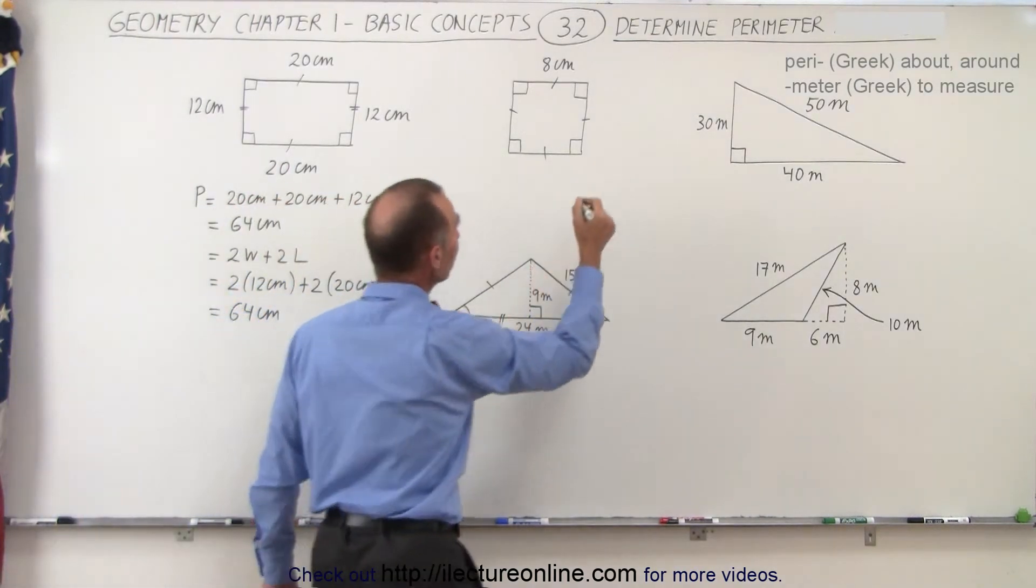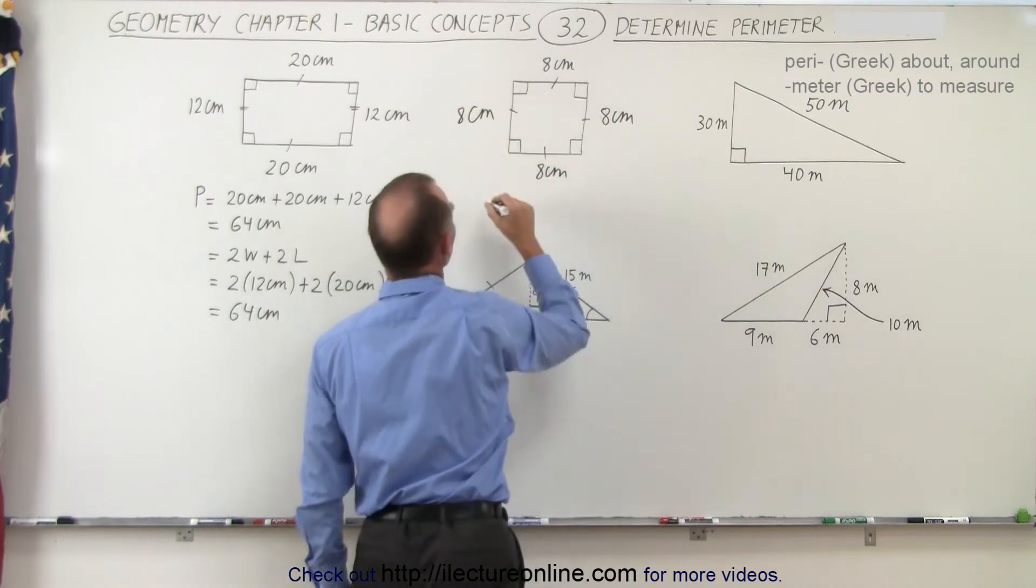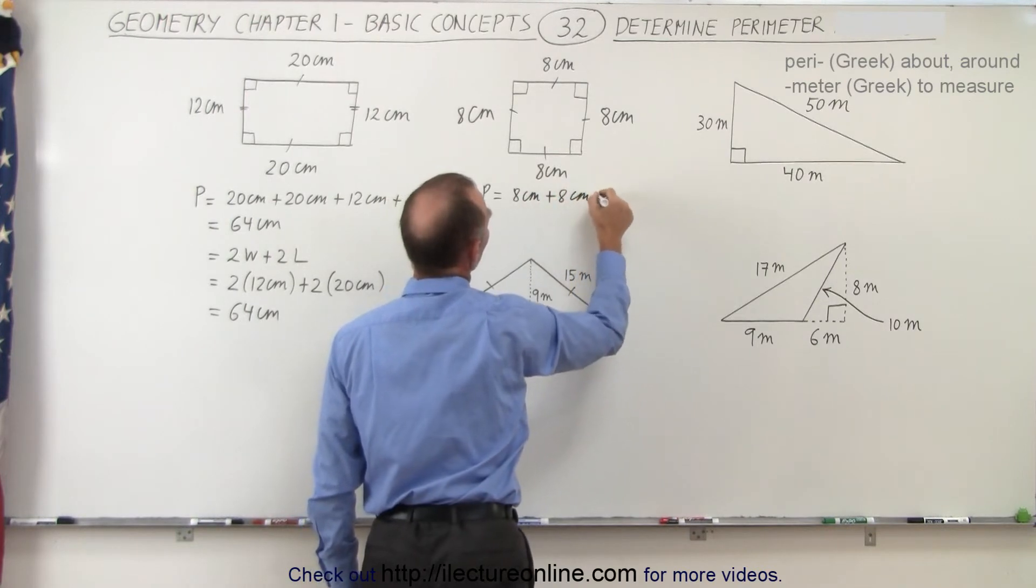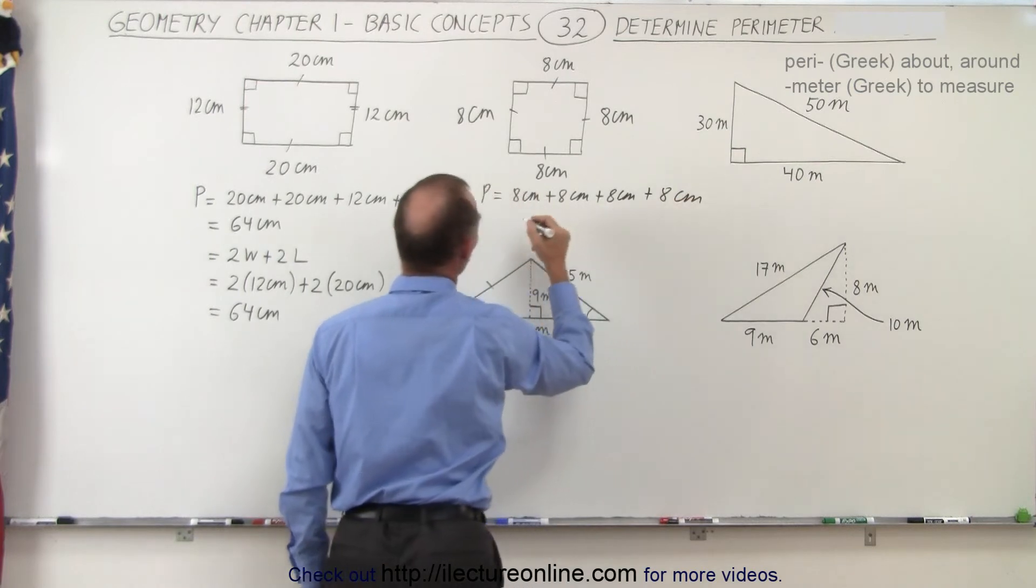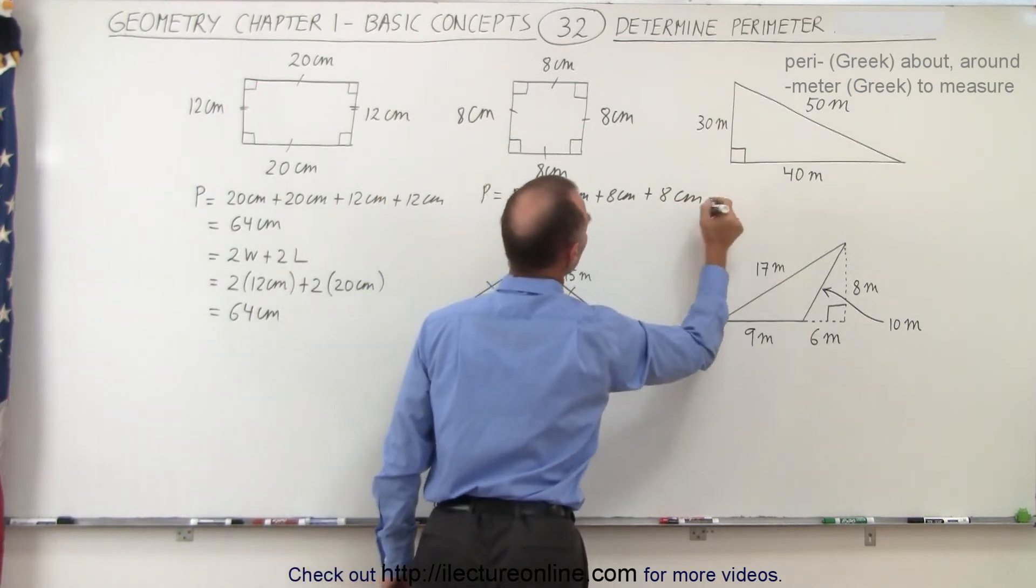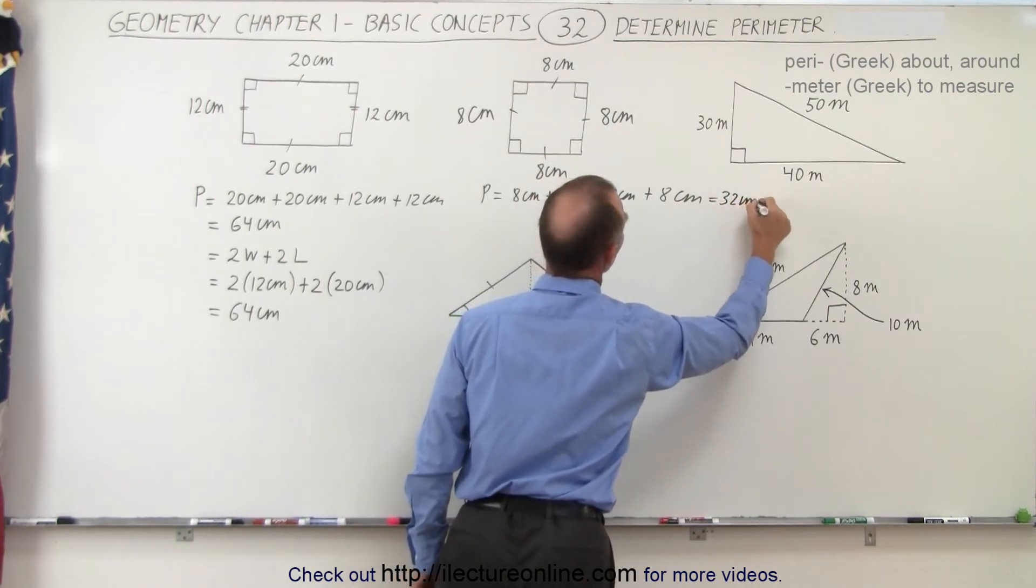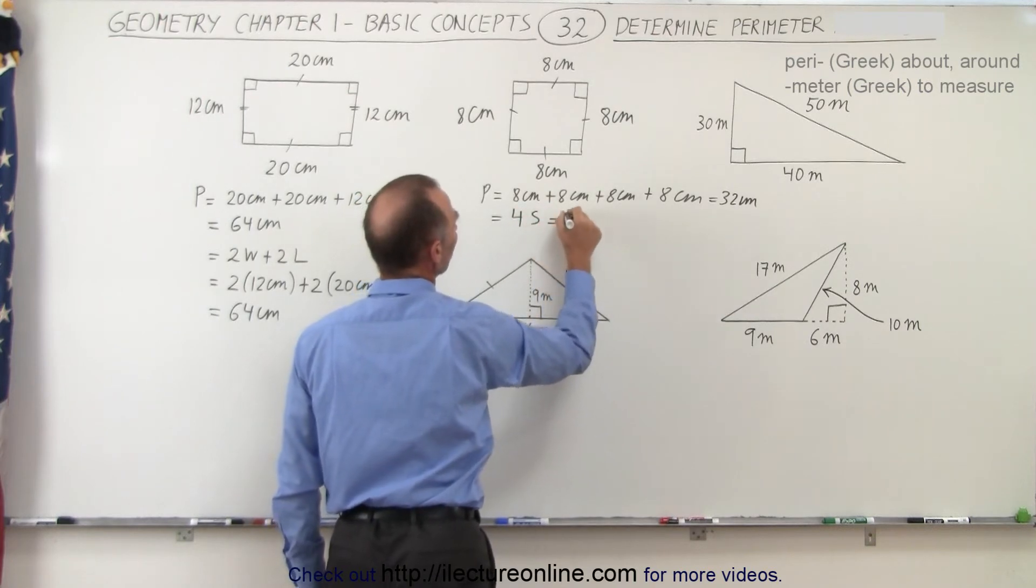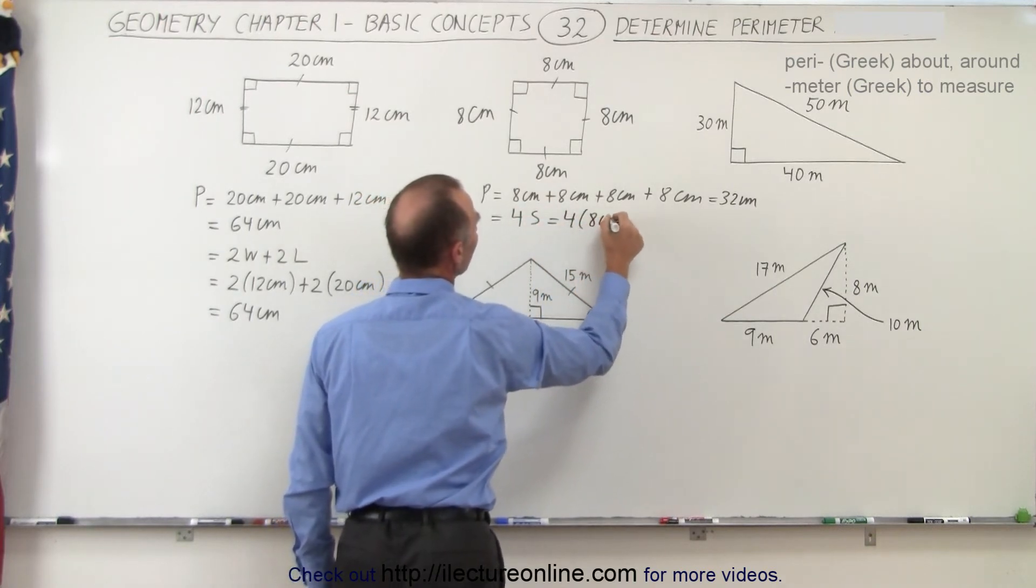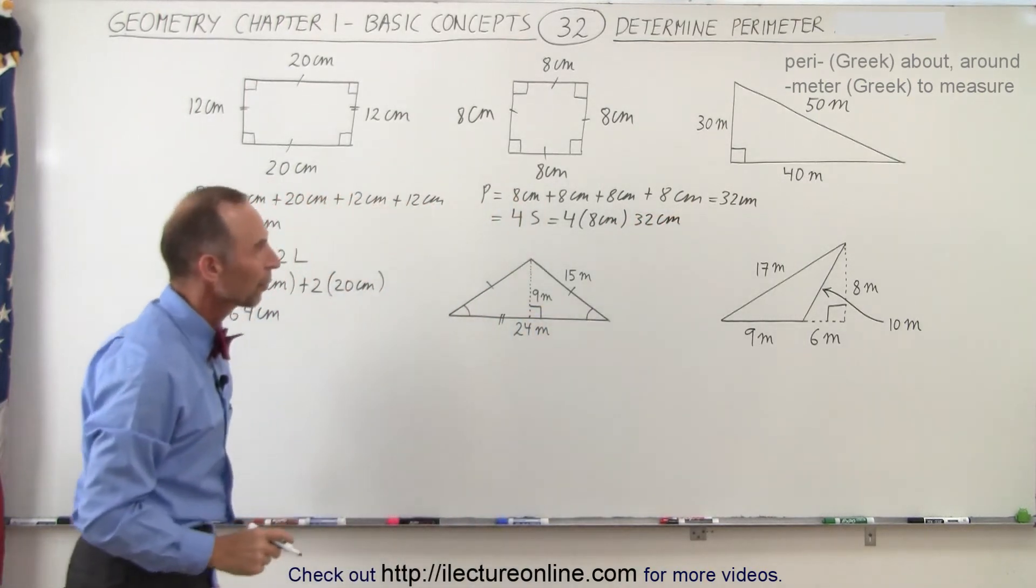For a square, it's a little bit easier, because all the sides have the same length. So we can say that the perimeter is simply equal to 8 centimeters plus 8 centimeters plus 8 centimeters plus 8 centimeters, that would be 32 centimeters. Or, we can say that it's equal to 4 times the length of each side, which is 4 times 8 centimeters, which is also 32 centimeters. So that's how we find the perimeter.